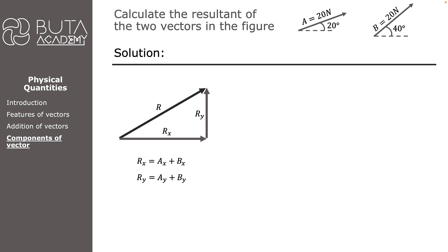As we remember from the previous slide, once the components are known, we can use Pythagoras' theorem to calculate the magnitude of the resultant vector. After so much theory, it's time to do some calculation.